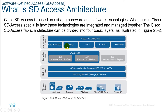On policy, the DNA Center defines business intent, including creation of virtual networks, assignment of endpoints to virtual networks, and policy contract definition. For provision, it provisions devices and adds them to inventory for management, supports Cisco Plug-and-Play, creates fabric sites along with other SD-Access components, and provides service catalogs such as StealthWatch security analytics and application hosting on Cisco Catalyst 9000 series switches.